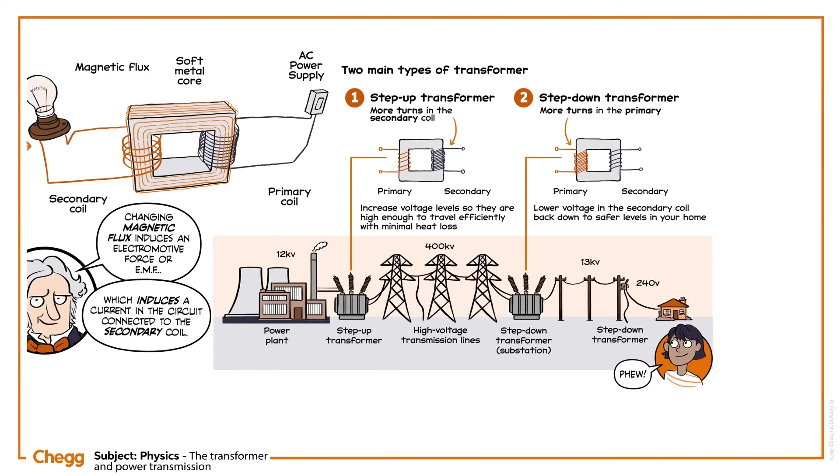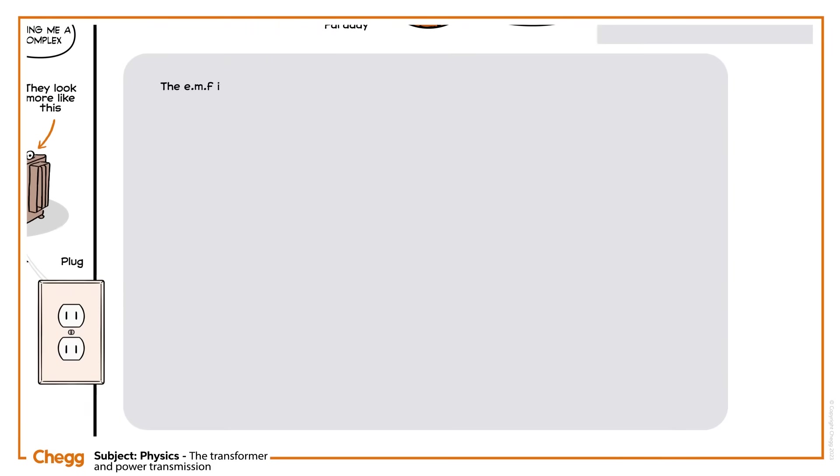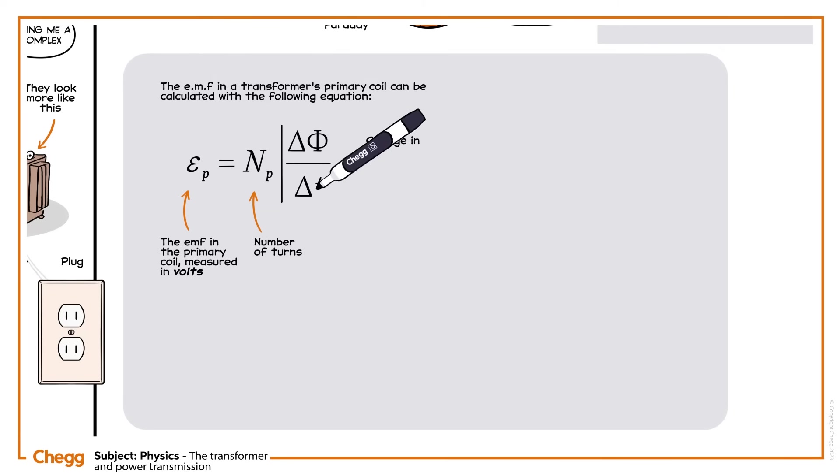Now for some transformer equations. The EMF in a transformer's primary coil can be calculated with the following equation. Here, epsilon p is the EMF in the primary coil measured in volts. Np is the number of turns in the primary coil, and delta-phi is the change in magnetic flux over time delta-t.